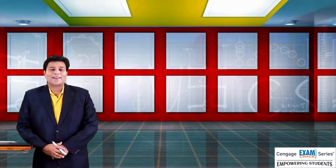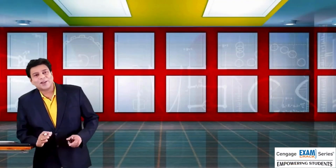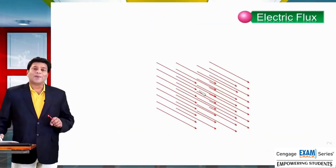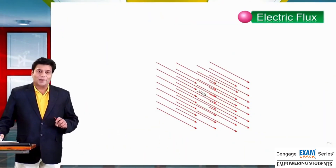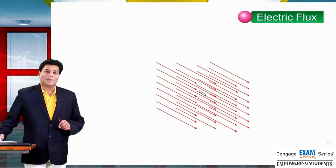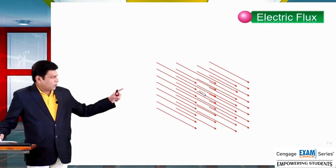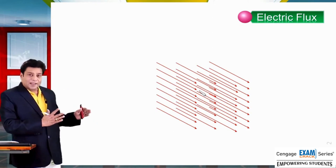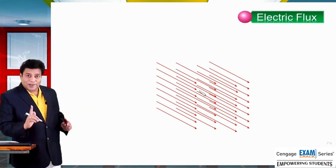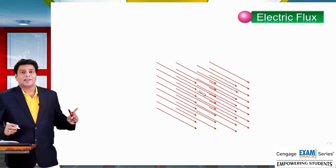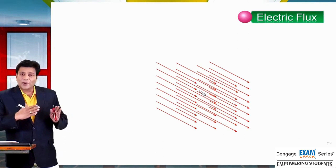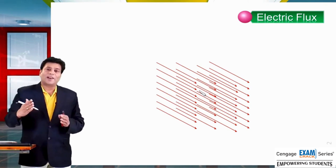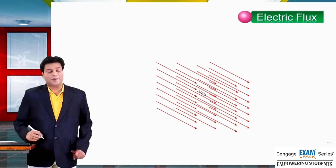Dear students, in this section we are going to discuss about electric flux. Let us consider a uniform electric field. The uniform electric field is one where electric field lines are parallel and equally spaced. So we call this electric field a uniform electric field.